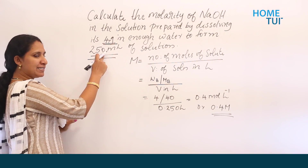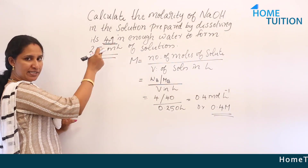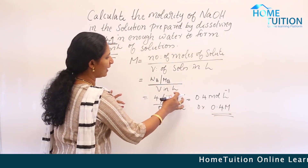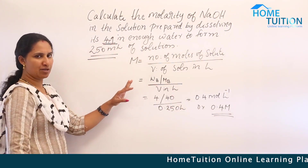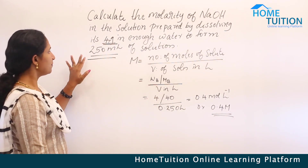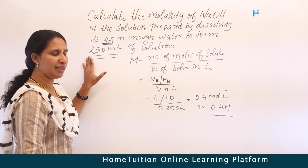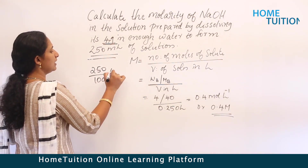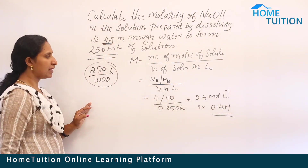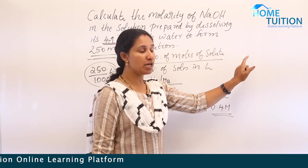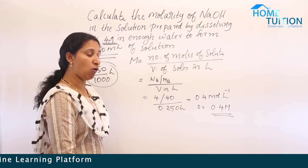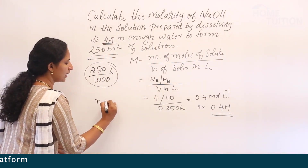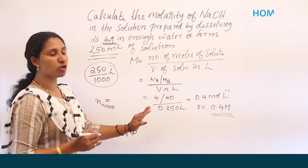The volume is given in milliliters, so we convert: 250 mL divided by 1000 equals 0.250 liters. The number of moles of NaOH equals mass divided by molecular mass: 4 grams divided by 40 g/mol.